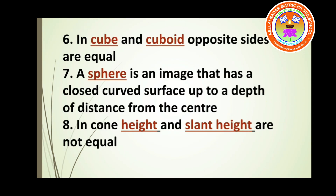Sixth fill-up: in cube and cuboid, opposite sides are equal. You have already learned about cube and cuboid. In a square, all 4 sides are equal, and in a rectangle, opposite sides are equal. So in both cube and cuboid, opposite sides are equal.